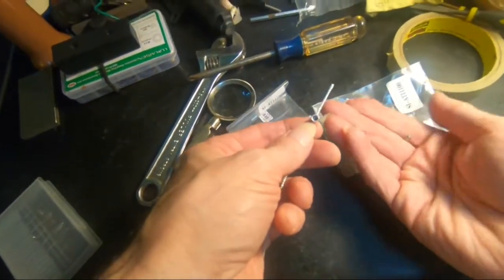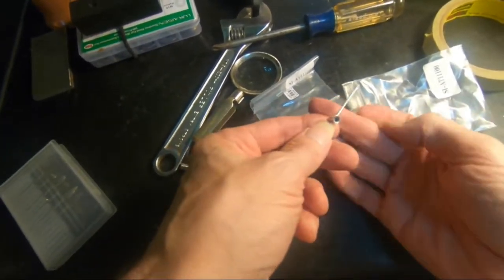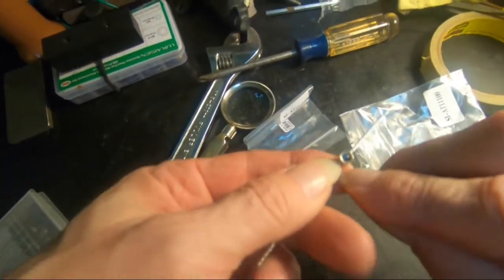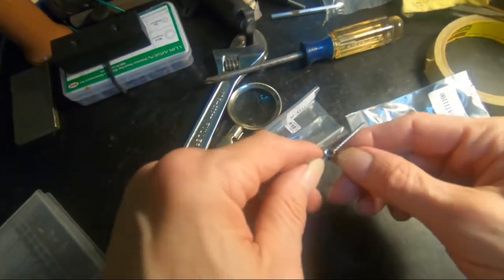And then you have these little set screws here that go in with an Allen wrench, and then you have a flat head on this other side so you can really tighten them down.